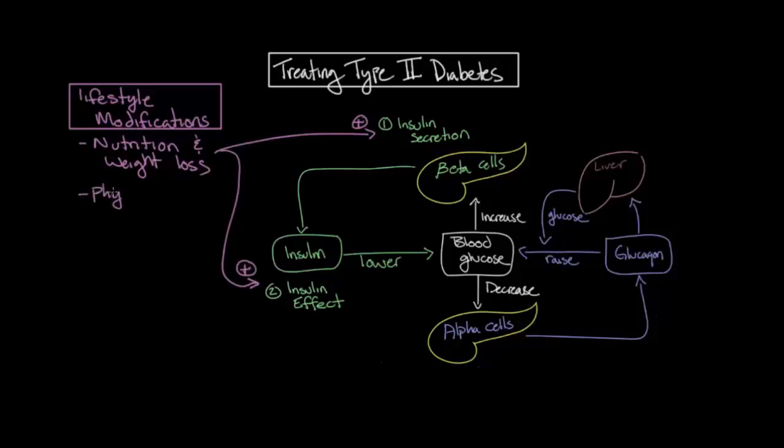The other lifestyle modification is physical activity. Independent of weight loss, increased physical activity has been shown to improve glycemic control through reducing insulin resistance. The benefits of exercise begin almost immediately. However, they can be short-lived if physical activity is not maintained, persisting only about three to six days after the cessation of routine exercise.